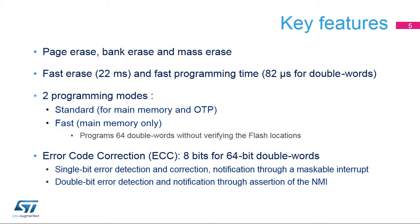The flash memory supports page, bank and mass erase operations. A page, bank or mass erase operation requires only 22 milliseconds, and the programming time is only 82 microseconds for a double word. Fast programming mode writes 62 double words in a row and reduces the page programming time, eliminating the need for verifying the flash locations for each double word access.